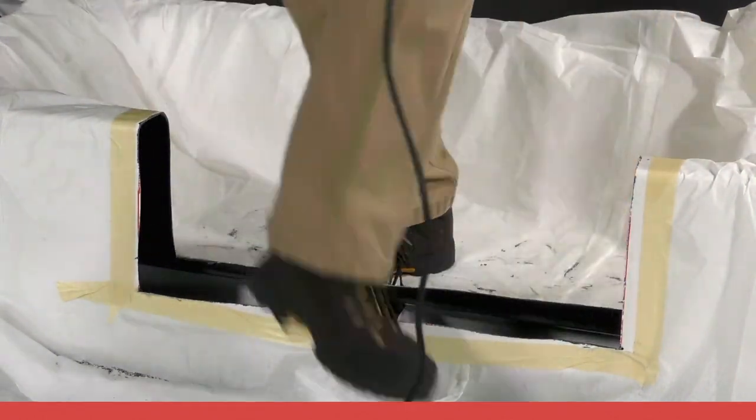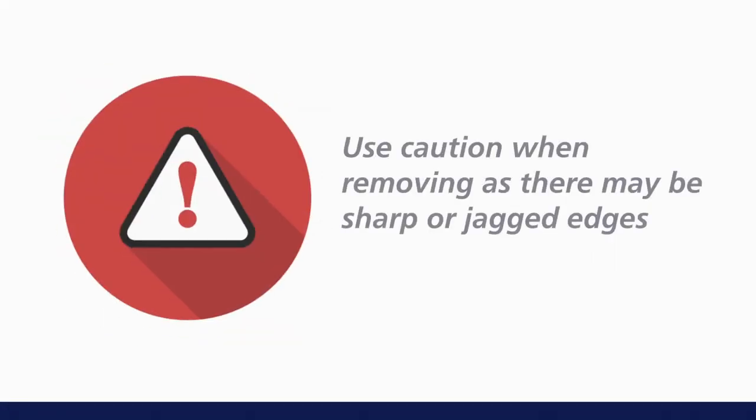Use caution when removing the cutout section, as there may be sharp or jagged edges both on the cutout segment and along the edges of where the cuts were made on the sides of the tub.